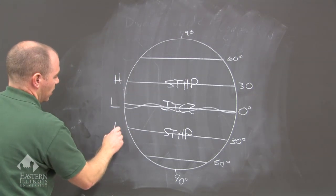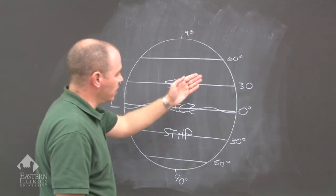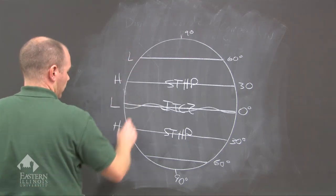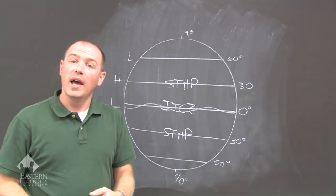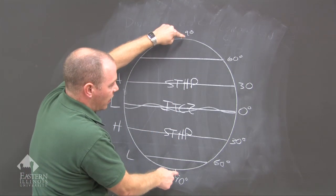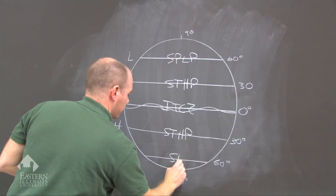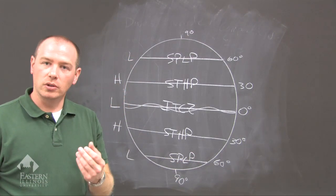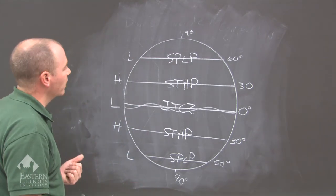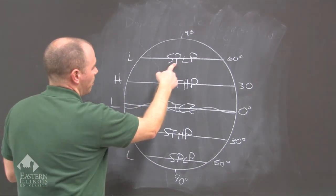The STHP is high pressure. Moving one step north and south to 60 degrees north and 60 degrees south, we get another low pressure. This low pressure is not as strong as the ITCZ because there is a loss of energy going further north and south. This is called the SPLP — the subpolar low pressure — which helps bring us our precipitation and influences our weather.